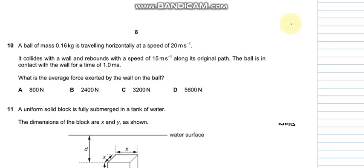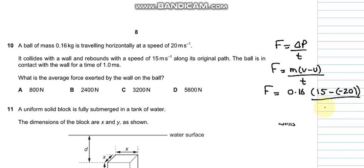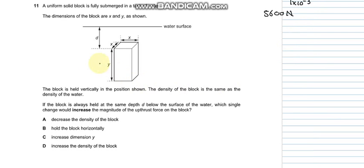Force is change in momentum over total time. Force can be written as m(v minus u) over time, and force can further be written as: mass is 0.16 kg, velocity is 15 considering the rebound, minus minus 20, divided by the time of contact which is one millisecond. This makes up 5600. So D is the appropriate answer.